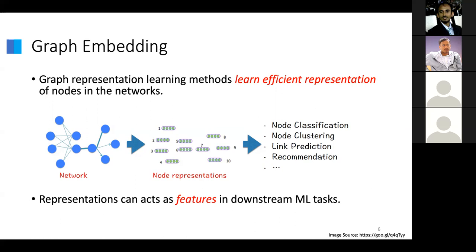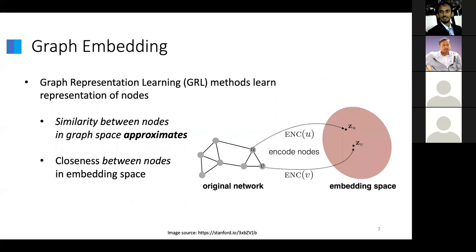These representations can act as features in downstream ML tasks. There are some desirable properties of these strategies. You want to make sure that the similarity between nodes in graph space is closely matched in whatever vector space you realize through this representation learning mechanism — essentially, the closeness between nodes in the embedding space should match how closely connected they are in graph space. We want this as an underlying objective for different methods.